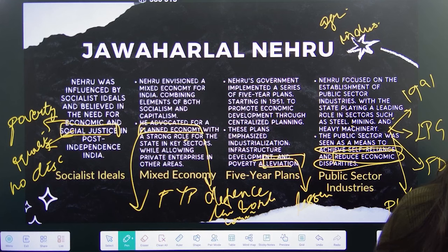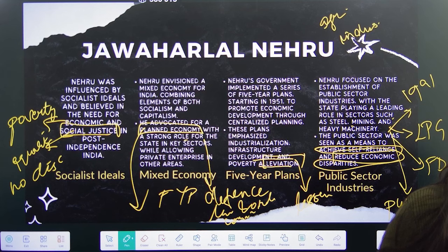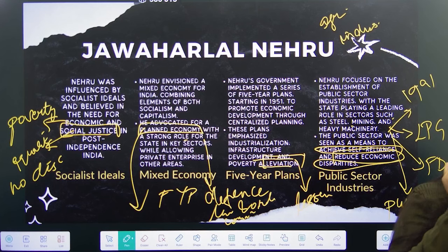Jawaharlal Nehru in the Karachi Session of 1931 said that if you want to end the exploitation of people in the country, you have to come up with the idea of economic freedom — because exploitation will be there as long as people are not free economically. Economic freedom would come by increasing the wages of people, taxing rich workers more, and having the state control key industries. His idea of fundamental rights and economic program was all adopted in the Karachi Session.